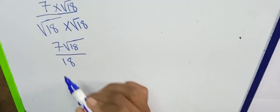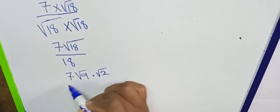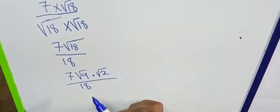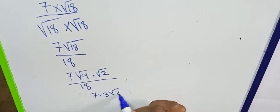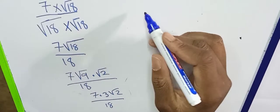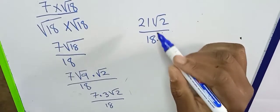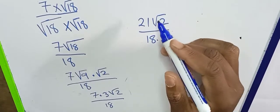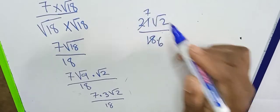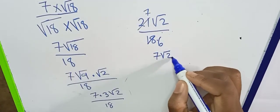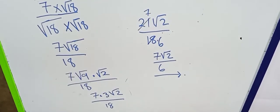But the square root of 18 is not fully simplified. It's the same as root 9 times root 2, so we have seven root 9 times root 2 all over 18. The square root of 9 is 3, so we get seven times three root two over 18, which is 21 root two over 18. We can reduce: three goes into 18 six times and into 21 seven times, so our final answer is seven root two over six.